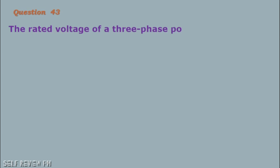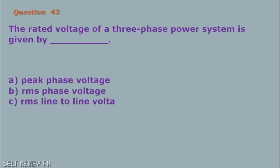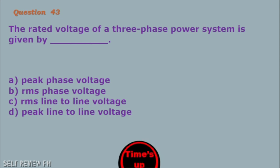Question number 43: The rated voltage of a three-phase power system is given by blank. A. Peak phase voltage B. RMS phase voltage C. RMS line-to-line voltage D. Peak line-to-line voltage. The correct answer is letter C, RMS line-to-line voltage.